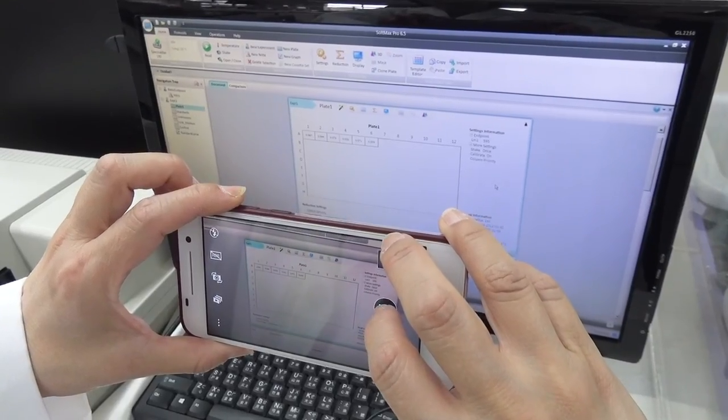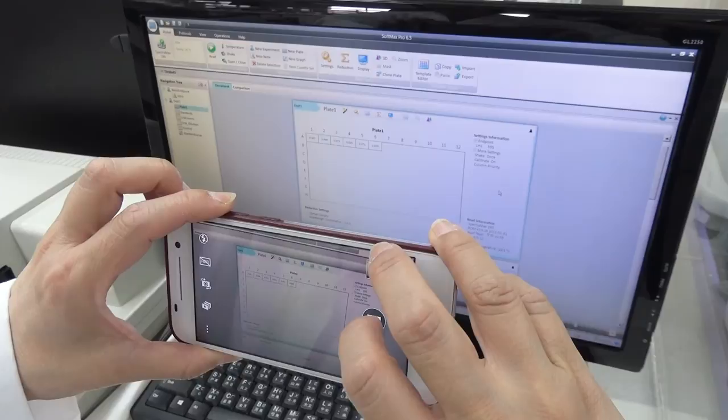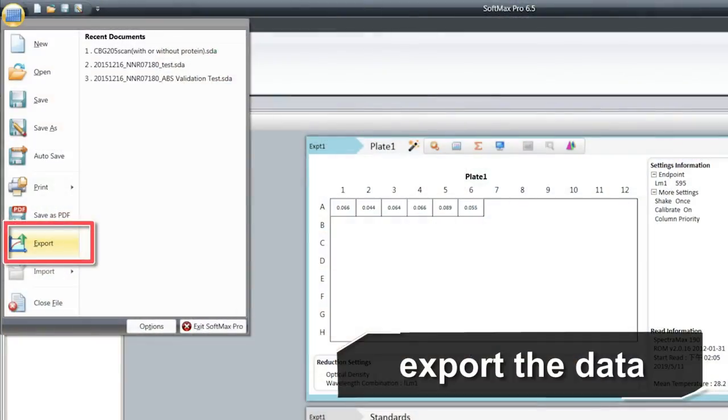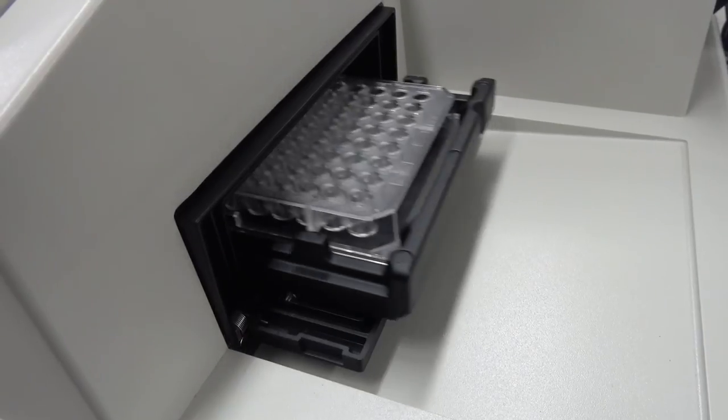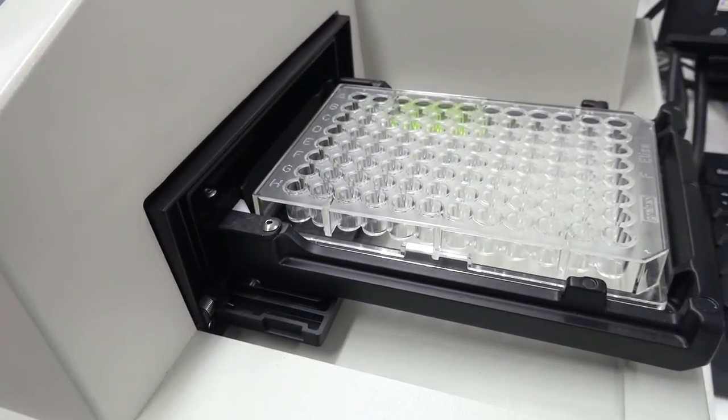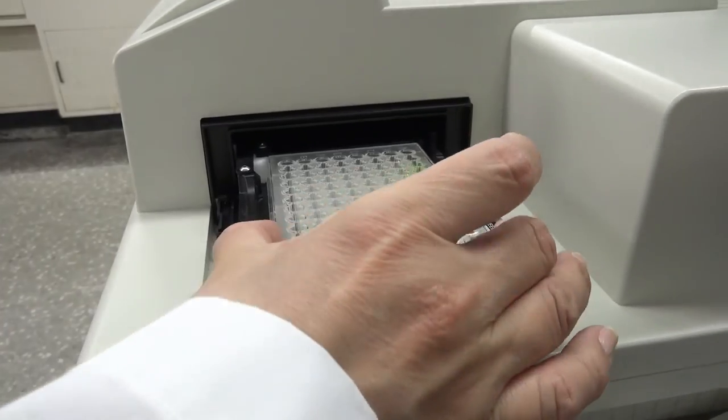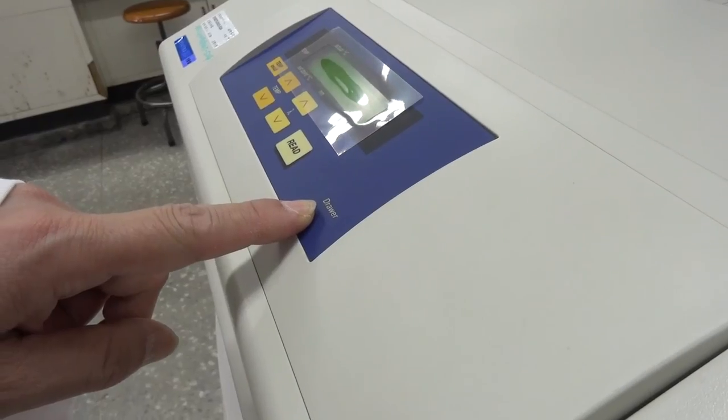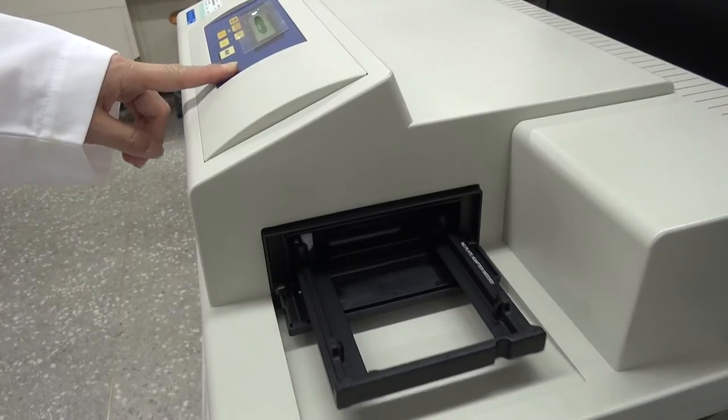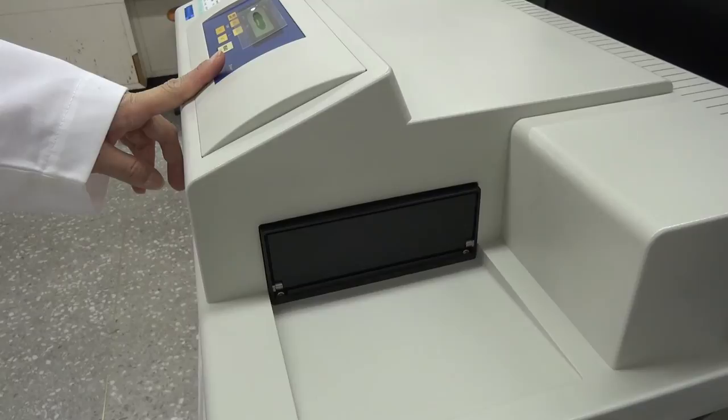7. Record the results by taking pictures with a cell phone or export the data from the computer for analysis. 8. The machine pushes the microplate out after measurement. Be sure to take the microplate away and press the drawer key on the panel to draw the microplate holder back into the machine.